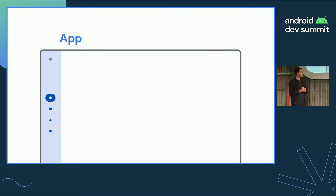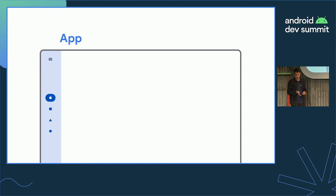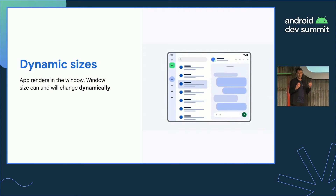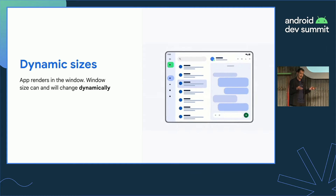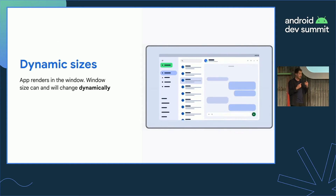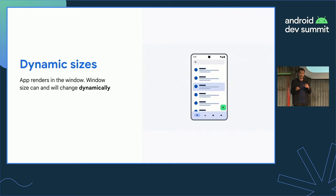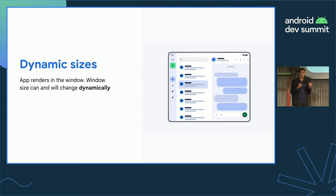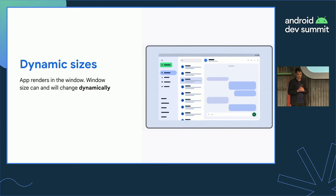Let's start from the application level. At this level, you basically have your window to render your whole UI into. This window has a size — height and width — and this width and height can change dynamically as your app is running. You have to keep these considerations in mind.